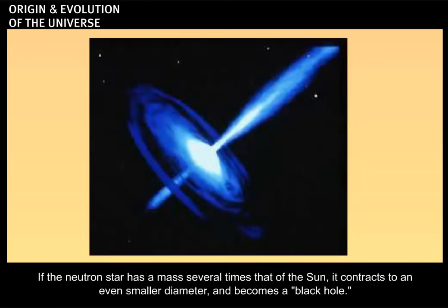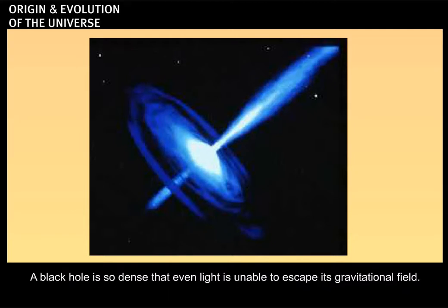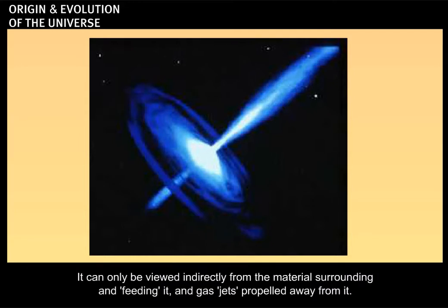If the neutron star has a mass several times that of the Sun, it contracts to an even smaller diameter and becomes a black hole. A black hole is so dense that even light is unable to escape its gravitational field. It can only be viewed indirectly from the materials surrounding and feeding it, and gas jets propelled away from it.